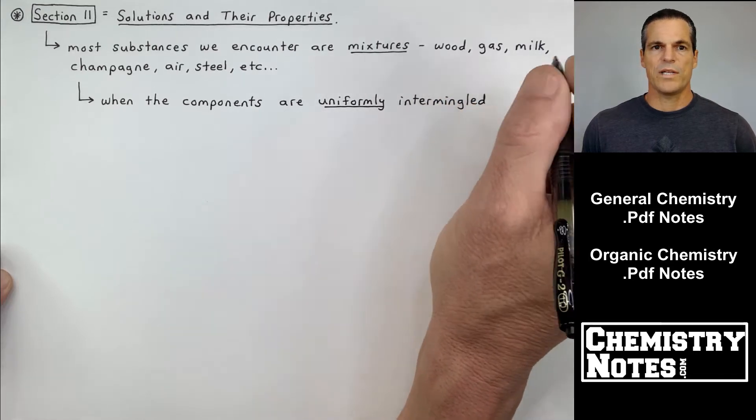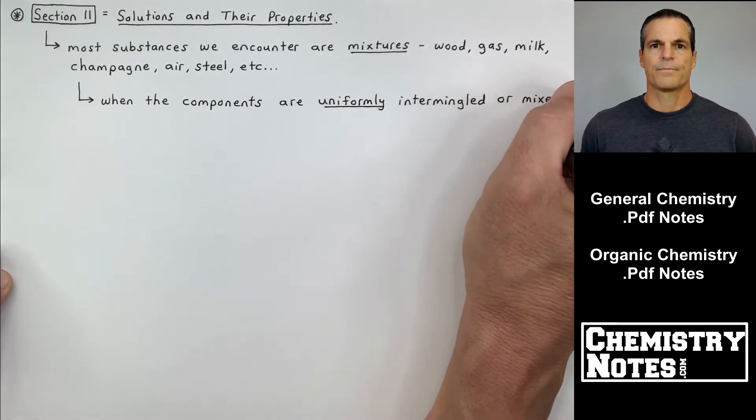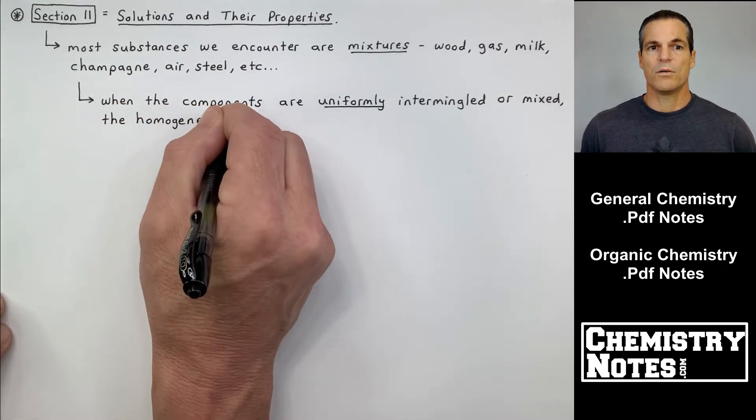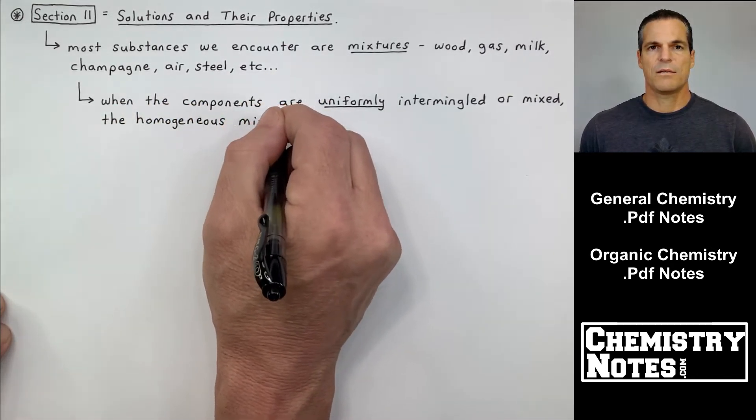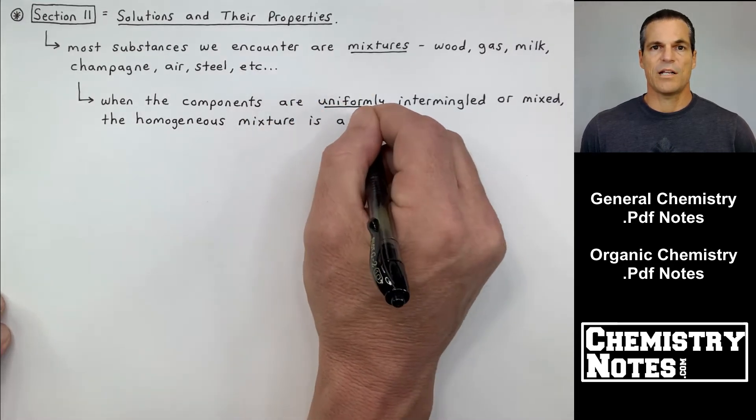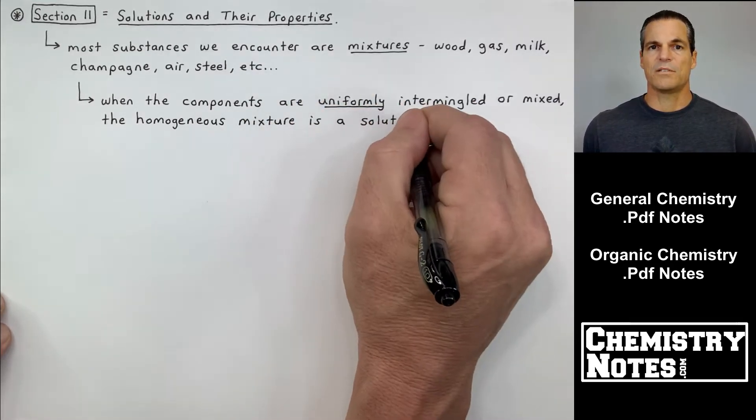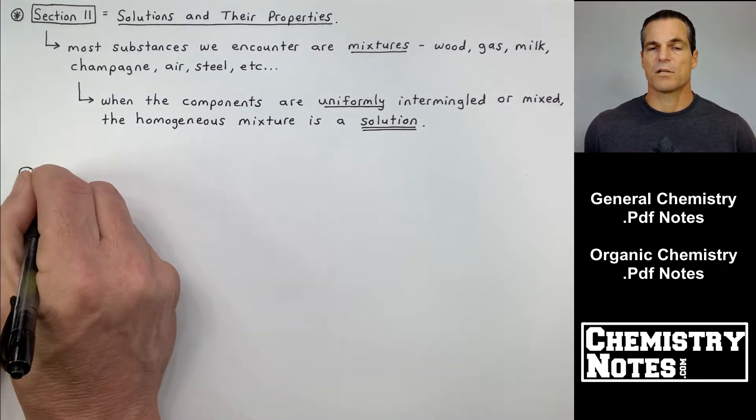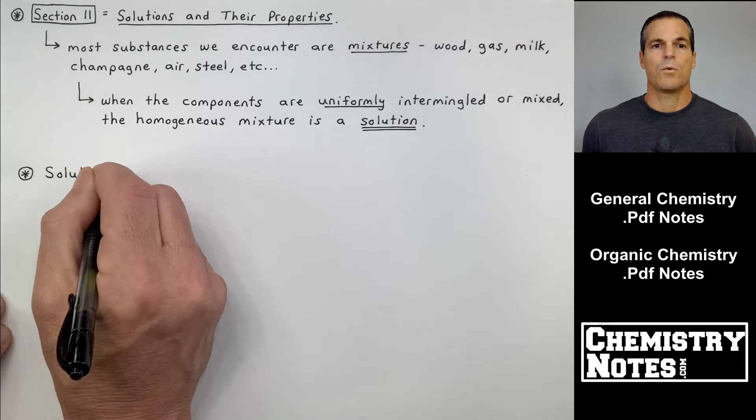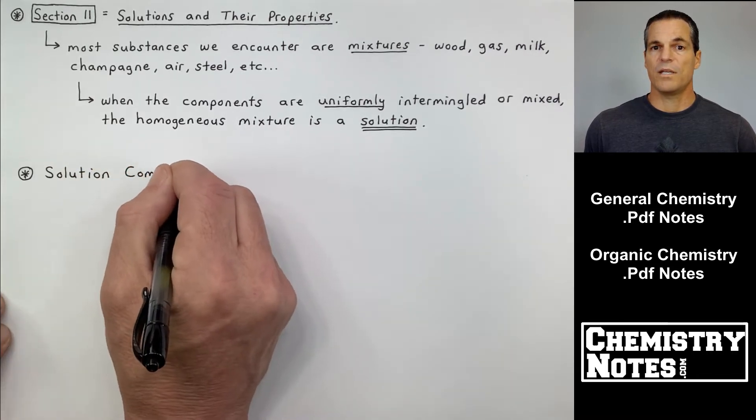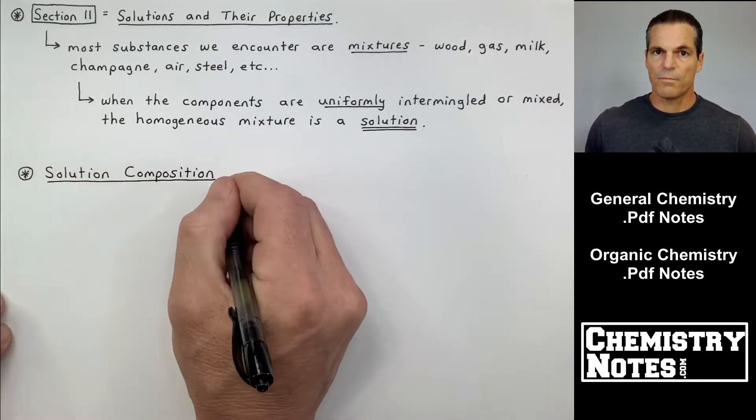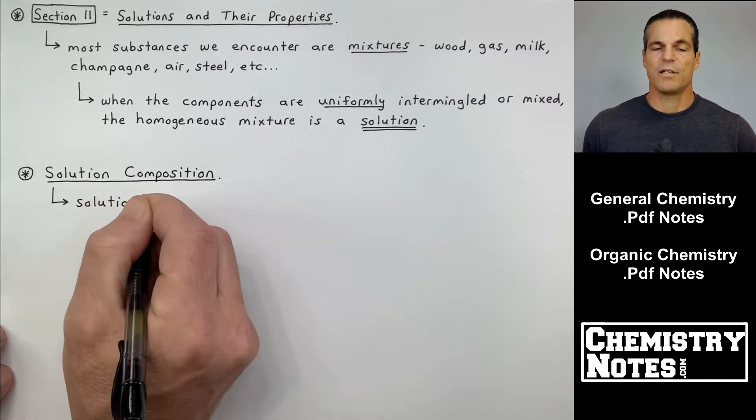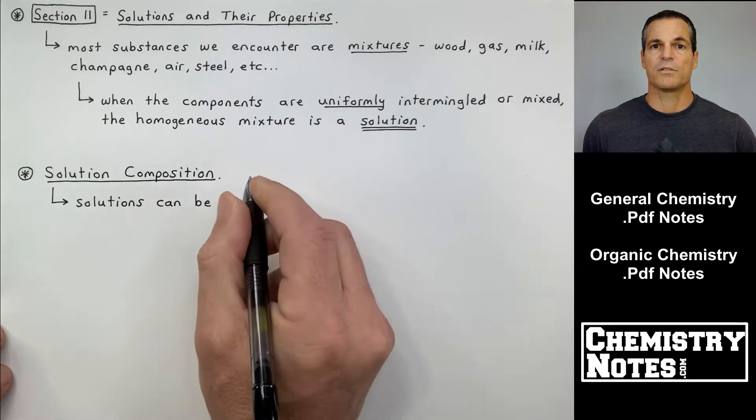Most substances we encounter are mixtures. Everyday examples include wood, gas, milk, champagne, air, steel, et cetera. These are all mixtures. That means they have more than one component in them. So when the components are uniformly intermingled or mixed, those are homogeneous mixtures. And we call those homogeneous mixtures solutions.